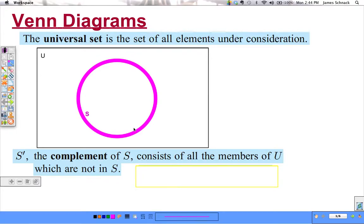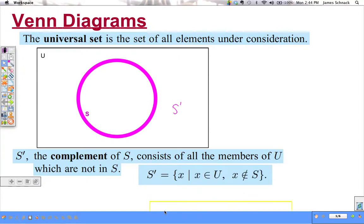So in our Venn diagram where would S prime be? In the circle? No. In the circle is set S. We want everything not in that. So S prime would be outside here. In set notation, S prime is equal to the set of X's where X is an element of U, but X is not an element of S.